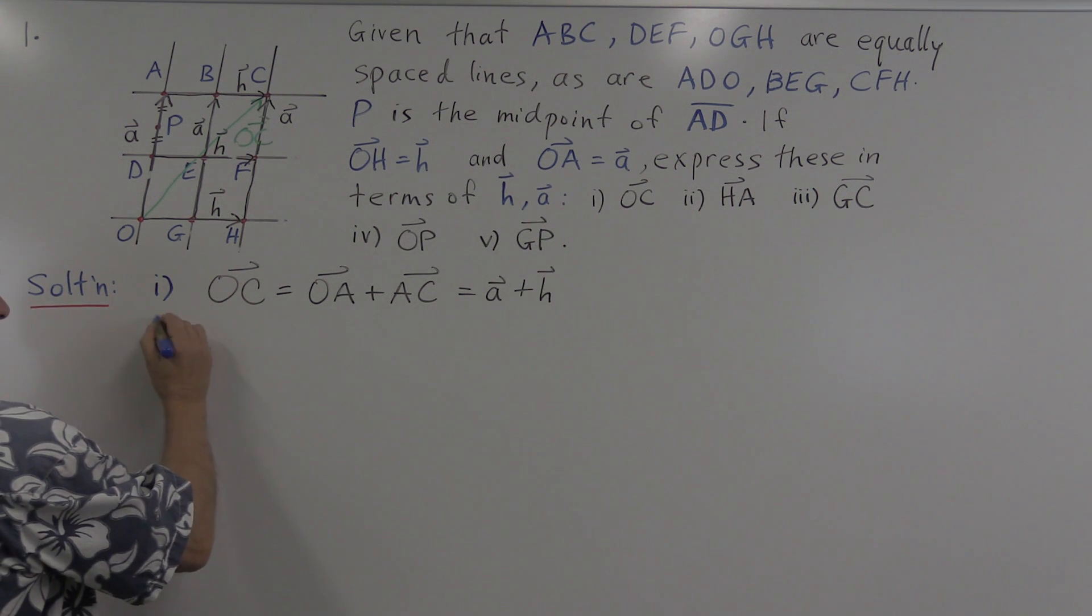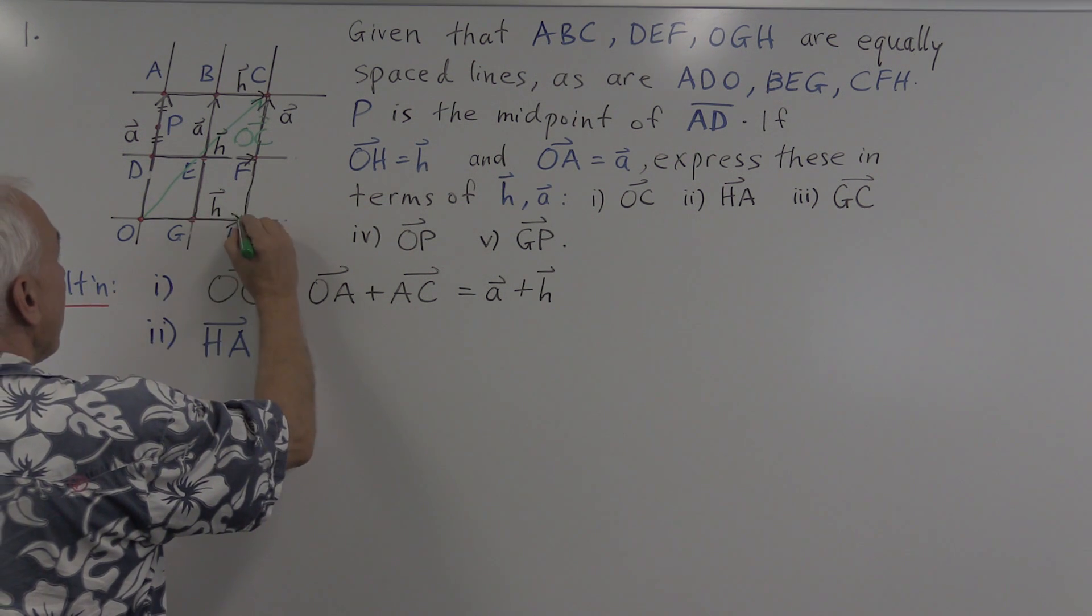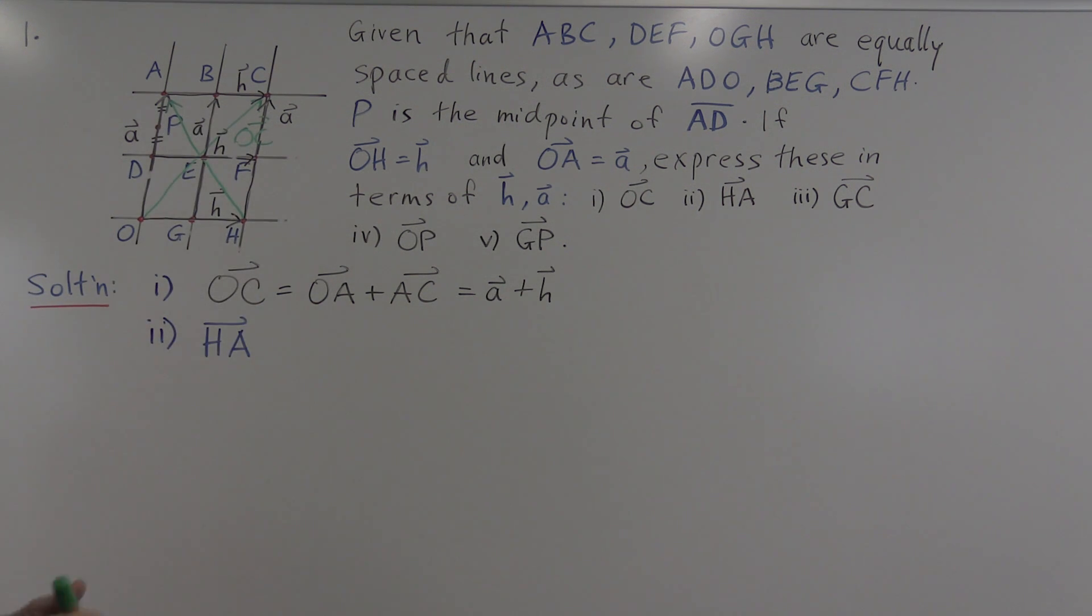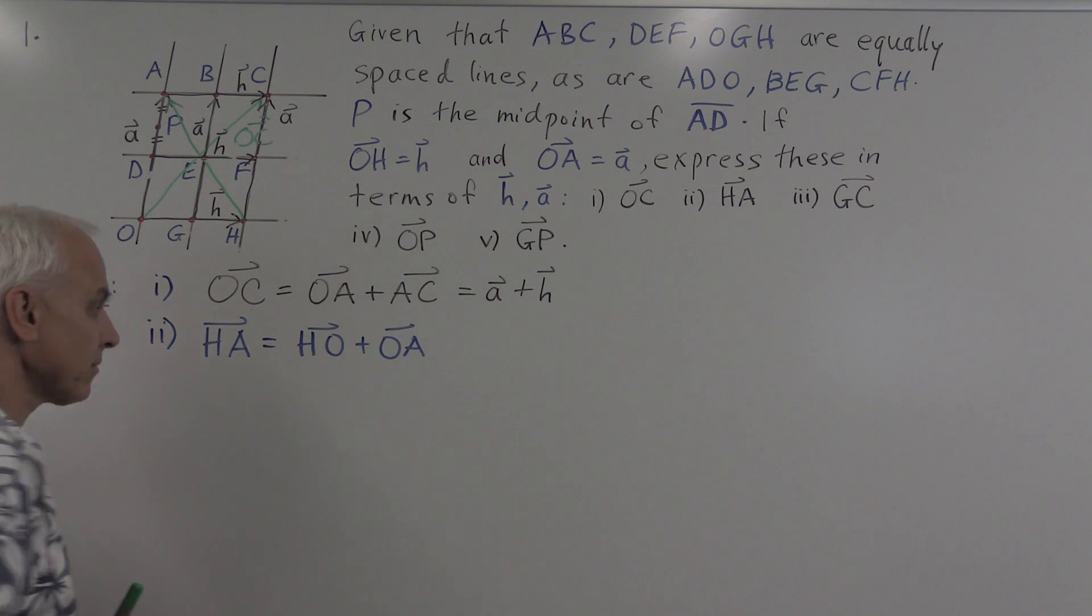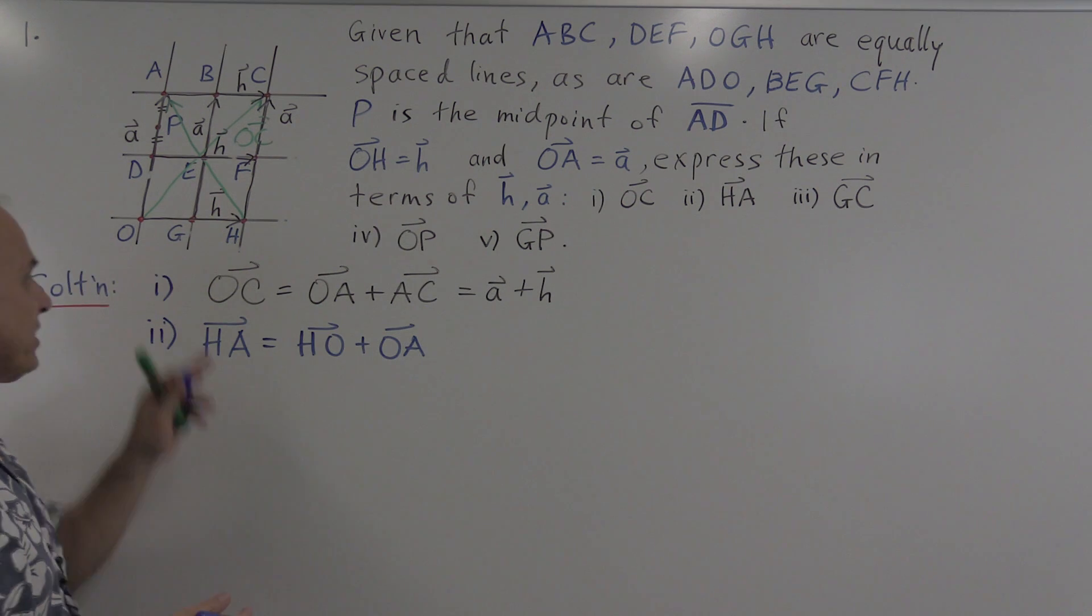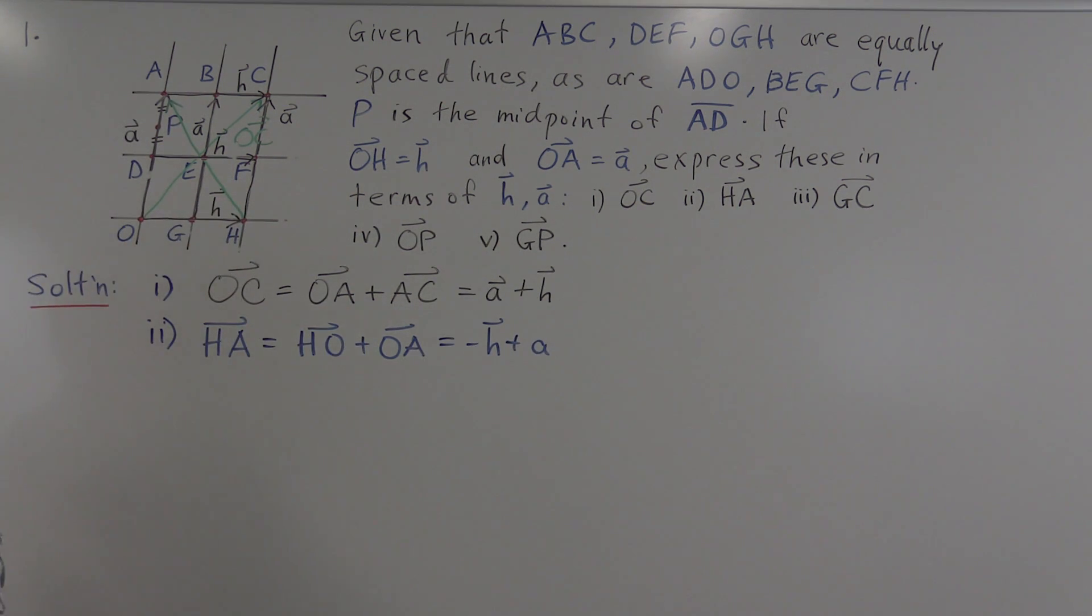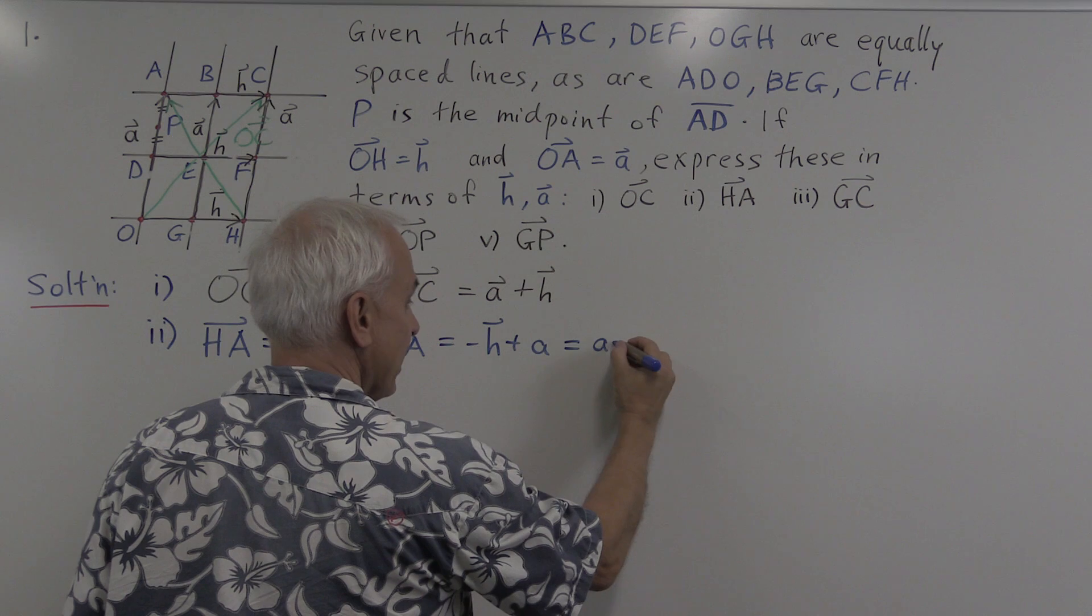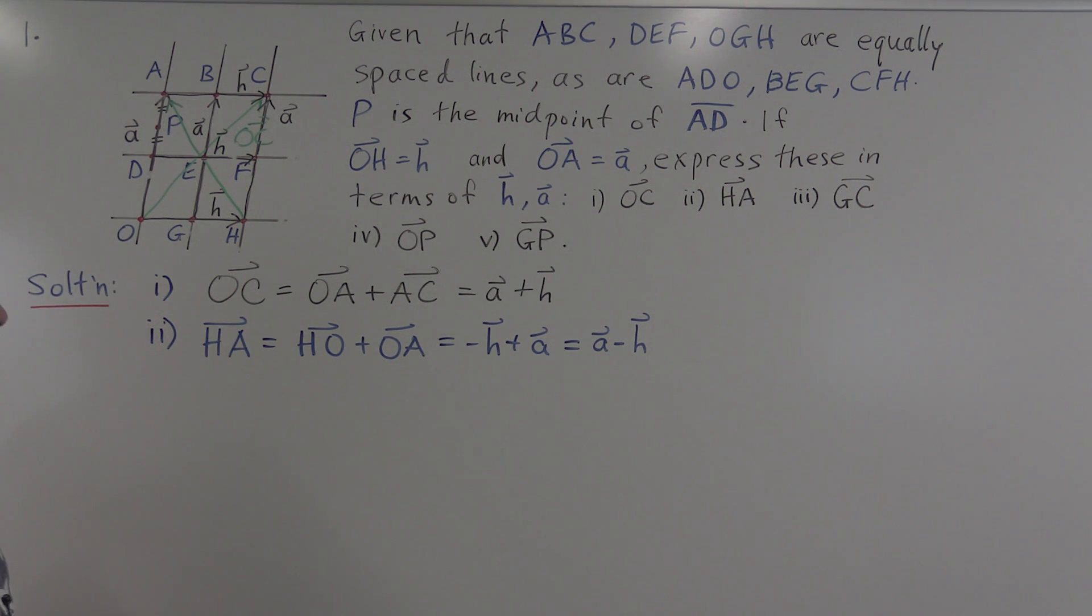How about HA? Now we're going from here to here. Let's draw that in. So there's the vector HA. And how do we get from H to A? Well, one way would be to say we can go from H first to O and then from O to A. So the vector HO is almost the same as the vector OH, but it's in the opposite direction. And so it's minus h. The vector OA is just the vector a. And so there's the answer. It's minus h plus a, which we could, if we wanted to, but we don't have to, rewrite it as a minus h.